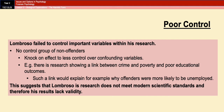As a final evaluation point, Lombroso also failed to control important variables within his research. You could argue it's because of the time when he did his research — modern scientific controls weren't really a massive thing at the time. However, it does obviously mean that there is going to be a lack of validity within his research. For example, there was no control group of non-offenders, which means he didn't really have anything to compare his findings to. That also has a knock-on effect of having less control over confounding variables. For example, there's research showing a link between crime and poverty and poor educational outcomes, which would explain why offenders were more likely to be unemployed — something he didn't control for. This suggests that Lombroso's research doesn't meet modern scientific standards, and therefore his results could lack validity.